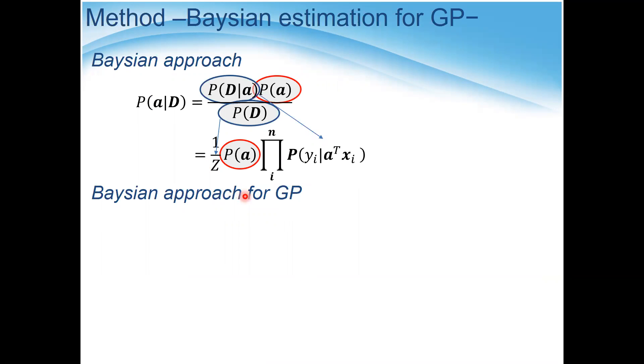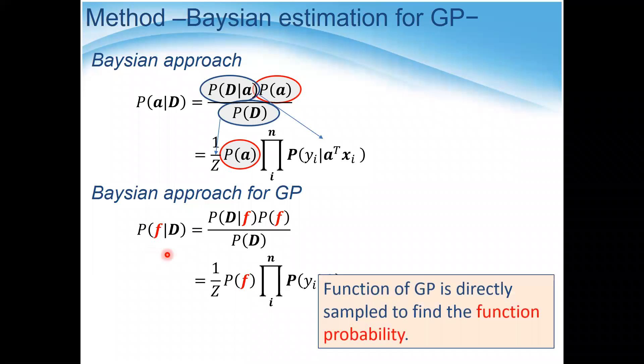Similarly, this Bayesian approach is applied for GP regression. In this case, instead of a being sampled, we directly sample the function itself. Because GP only gives the function distribution. So a function is sampled. And then finally, we could obtain the most likely function by using the posterior probability. In the GP case, functions are directly sampled to find function probability.